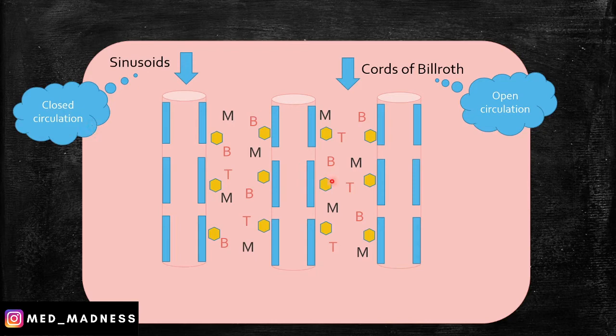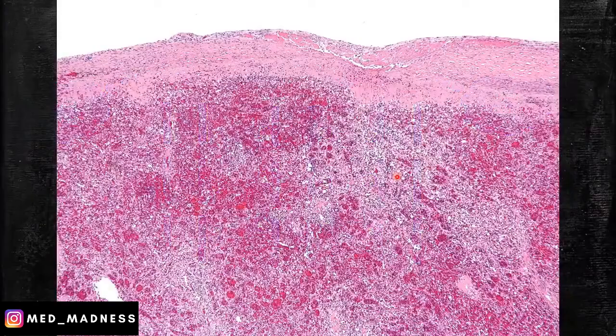You need to understand two important terms: closed circulation and open circulation. Blood from the penicillar arterioles passing through the sinusoids is closed circulation. Blood from the penicillar arterioles passing through the cords of Billroth is open circulation, because blood moves into the cords of Billroth — that is, out of the blood vessels. So this is open circulation.